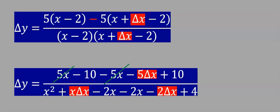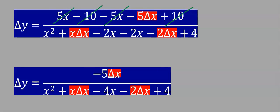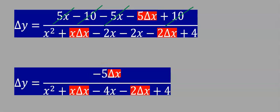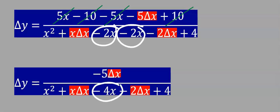After simplification, 5x takes away −5x, and −10 takes away +10. At the numerator we are left with only −5Δx. At the denominator, −2x adds to −2x giving −4x.